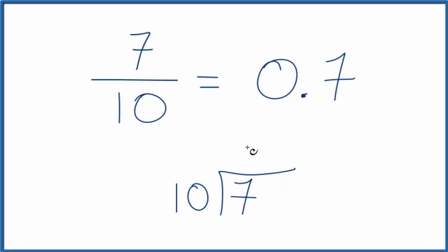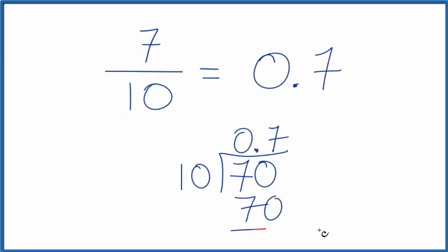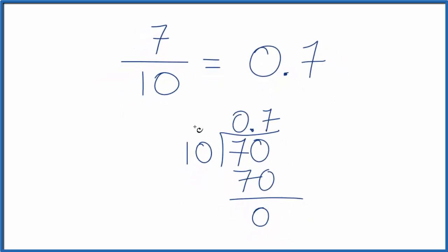10 doesn't go into 7, so let's put 0 and a decimal point. Now we can call this 70. 7 times 10, that's 70, with 0 remainder. So 7/10 equals 0.7, and that's just what we found on our calculator.